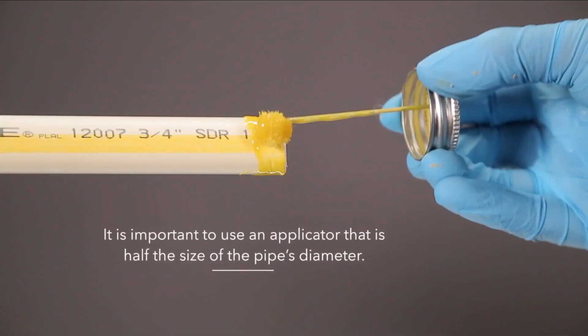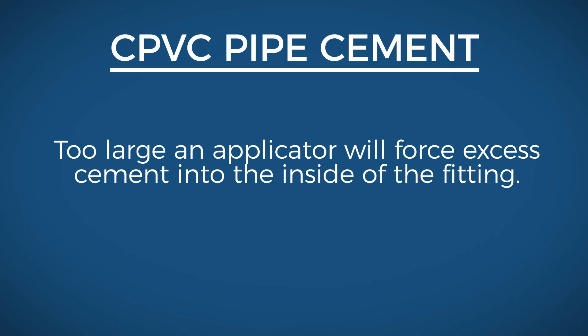It is important to use an applicator that is half the size of the pipe diameter. Too large of an applicator will force excess cement into the inside of the fitting. Too small of an applicator would not apply sufficient cement.